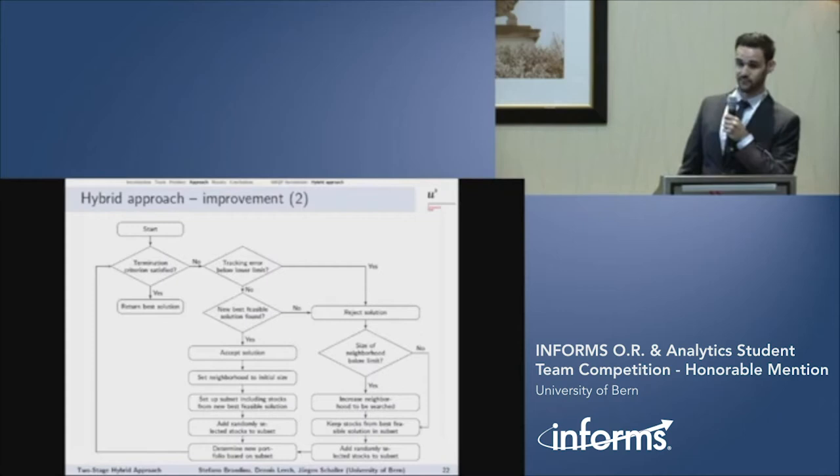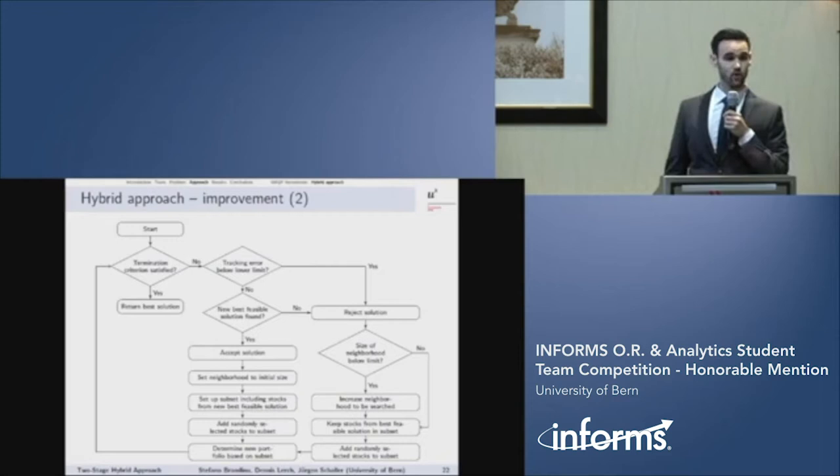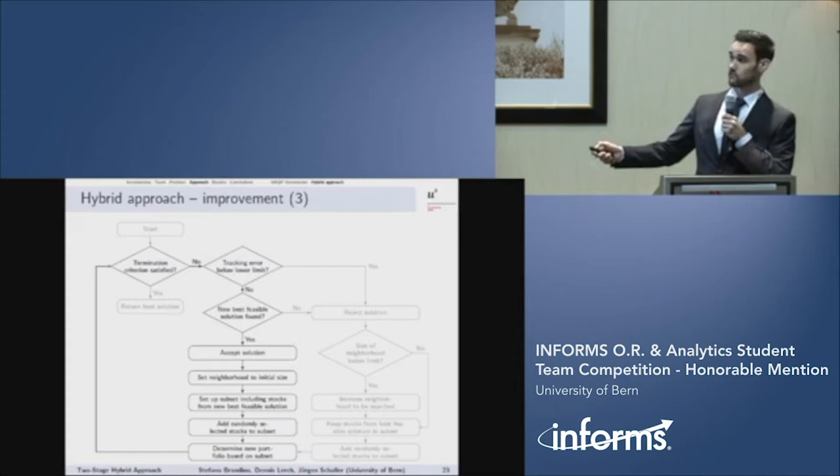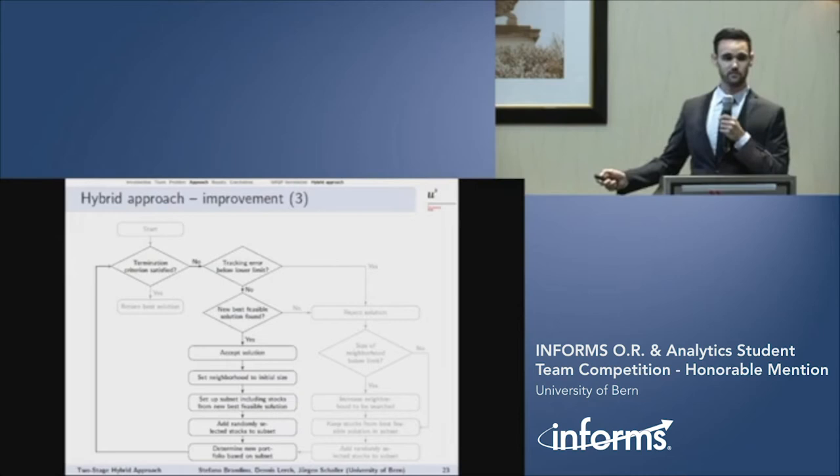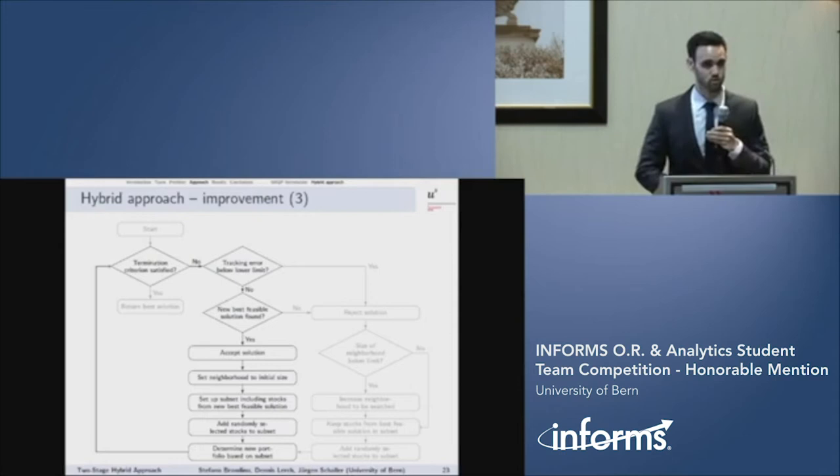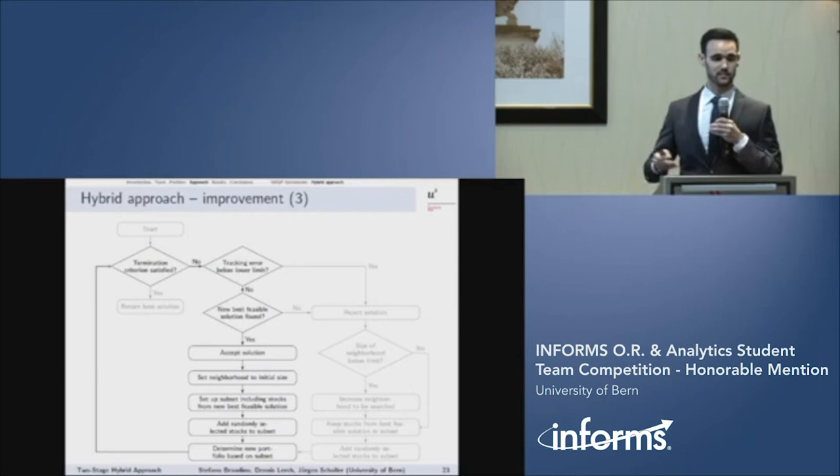Also here, we have the flowchart how stage two works. After each iteration, there are basically two outcomes. So let me go through both. We start with a first feasible solution and the algorithm checks if the termination criterion is satisfied. In the next step, he checks if the tracking error is below the limit and if a new best feasible solution has been found in terms of the objective function value. In the first iteration, we do not have a reference solution, so the algorithm accepts this solution. Further, he sets the neighborhood size to its initial size, because we will increase it later, and then sets up a subset which includes all the stocks which has been selected in the best feasible solution. Additionally, some randomly selected stocks are added to the subset and finally, the solver solves the MIQP again.